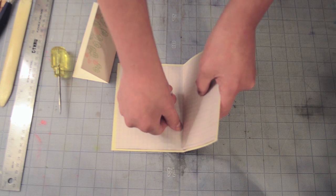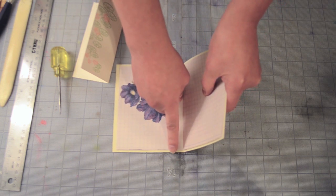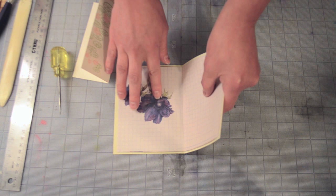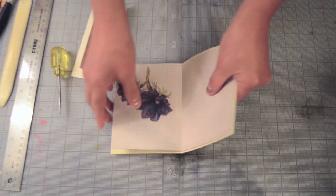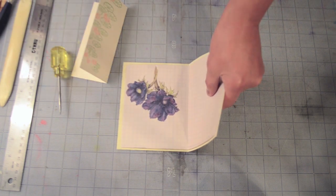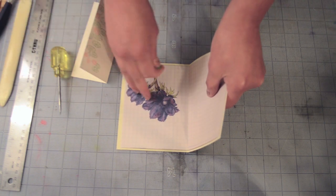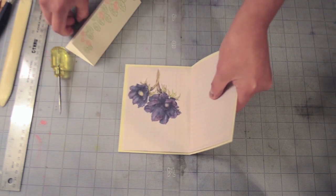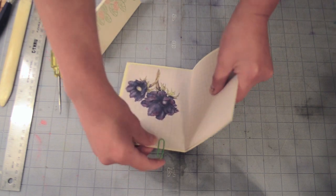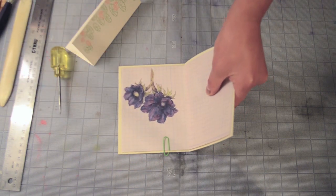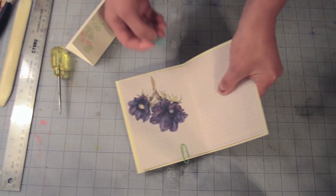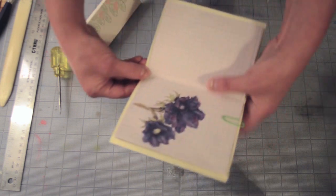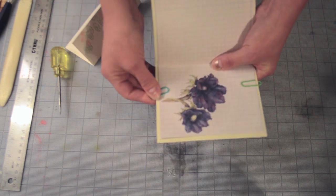This is just another thing to look out for because you want to make sure that your pages are centered on the top and bottom. And this is where those paper clips might come in handy. If you have trouble juggling all of these pieces, you can paper clip your pages together so that everything stays in one place and doesn't jiggle around while you're trying to punch your hole.